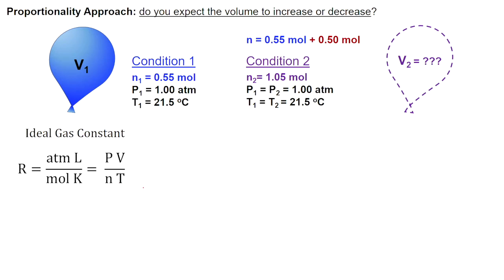Next, let's rearrange for volume because volume is what we're interested in. V equals NRT over P. Next, we can rewrite this equation as a proportionality.